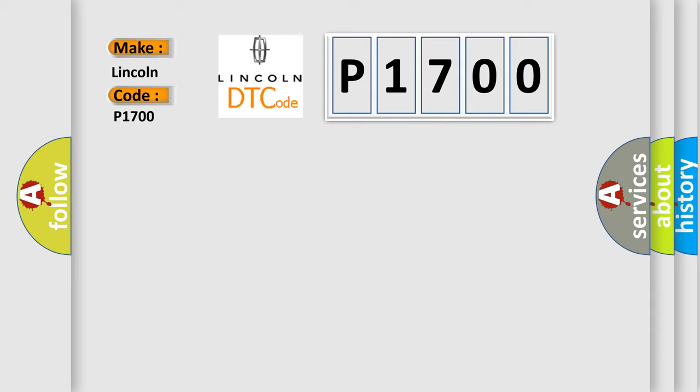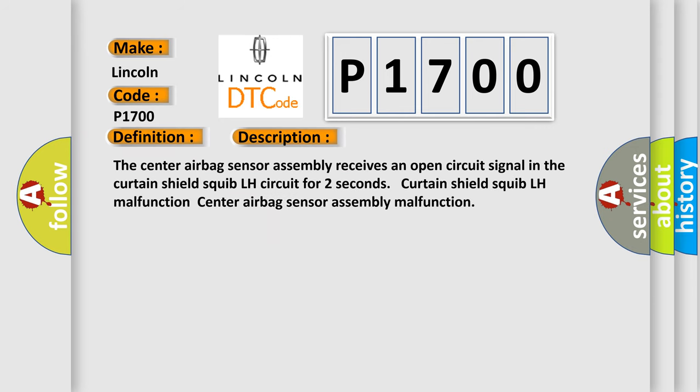The basic definition is: Open in Curtain Shield Squib LH circuit. And now this is a short description of this DTC code. The center airbag sensor assembly receives an open circuit signal in the Curtain Shield Squib LH circuit for two seconds. Curtain Shield Squib LH malfunction or Center airbag sensor assembly malfunction.